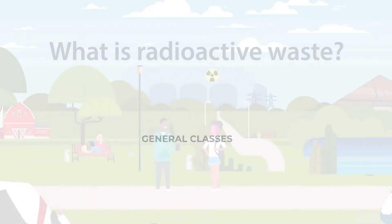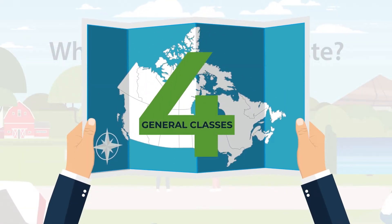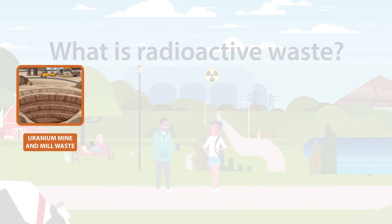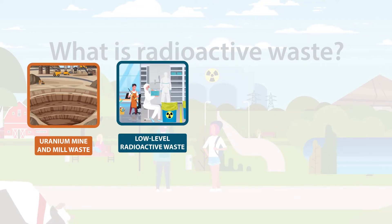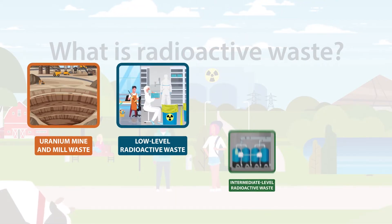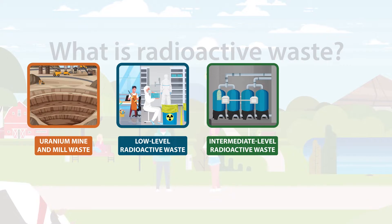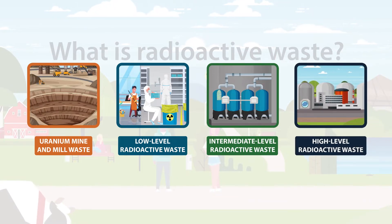There are four general classes of radioactive waste in Canada: uranium mine and mill waste, low level radioactive waste, intermediate level radioactive waste, and high level radioactive waste.